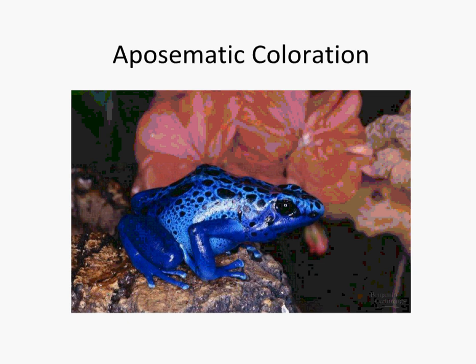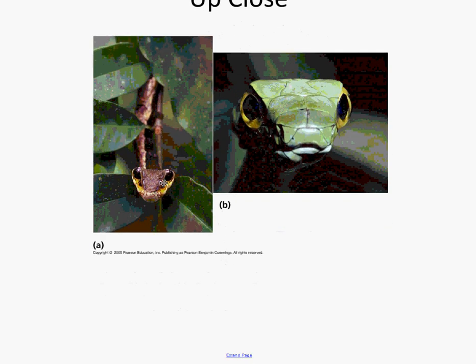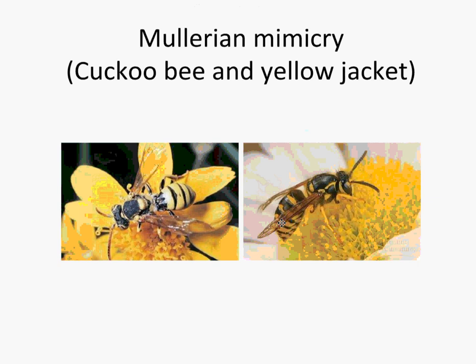A brightly colored frog warns other animals not to eat it because it will kill them, so it still avoids being eaten. Another type of protection is mimicry. Batesian mimicry is where a harmless animal mimics a harmful one — like a caterpillar that has learned to make its body look like a snake head. A bird is less likely to eat something that looks like a snake head, even though it's just a caterpillar trying not to get eaten.